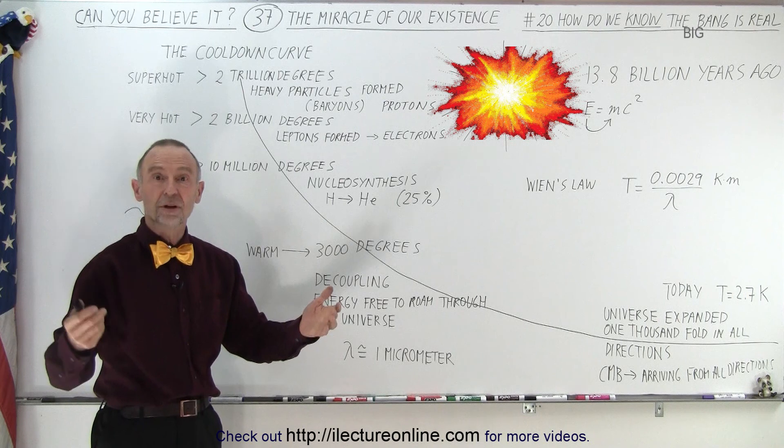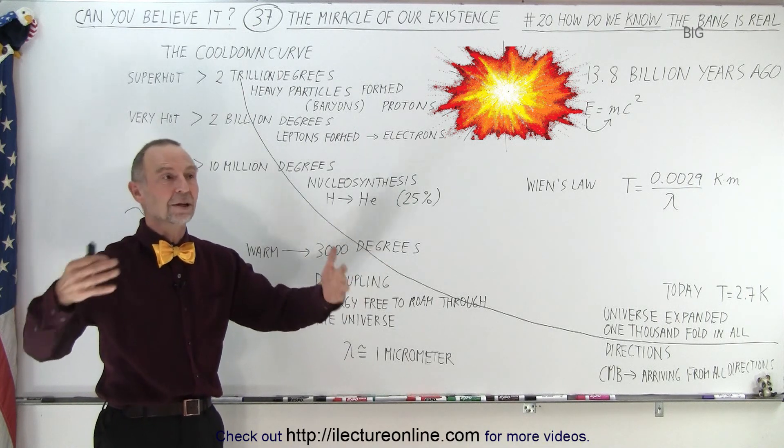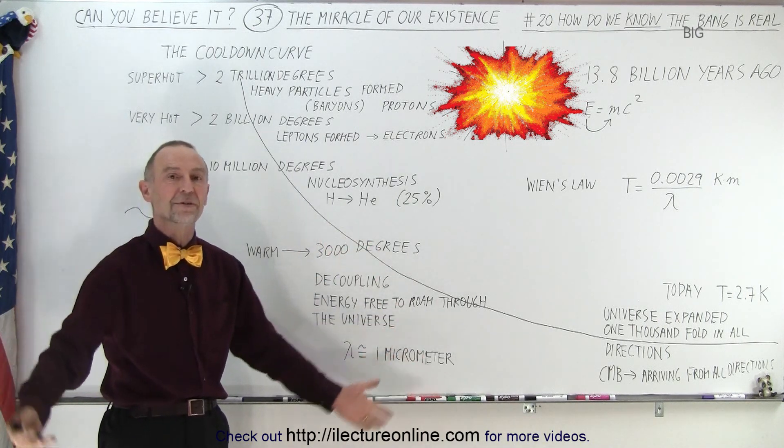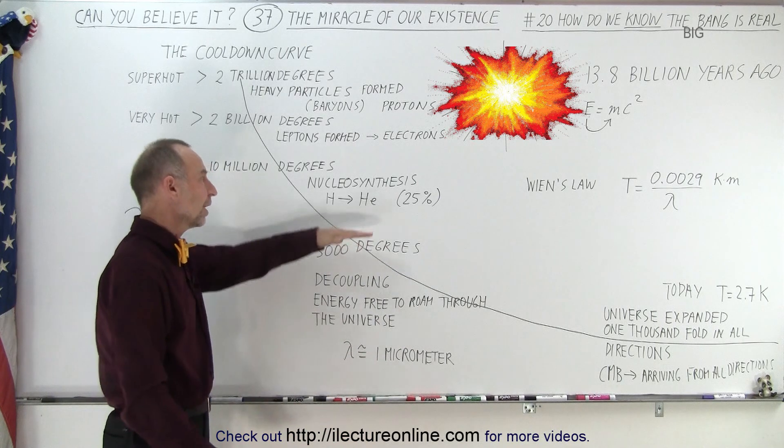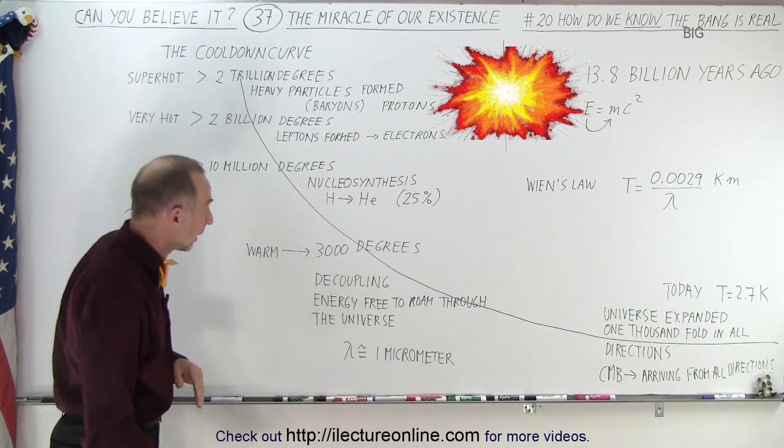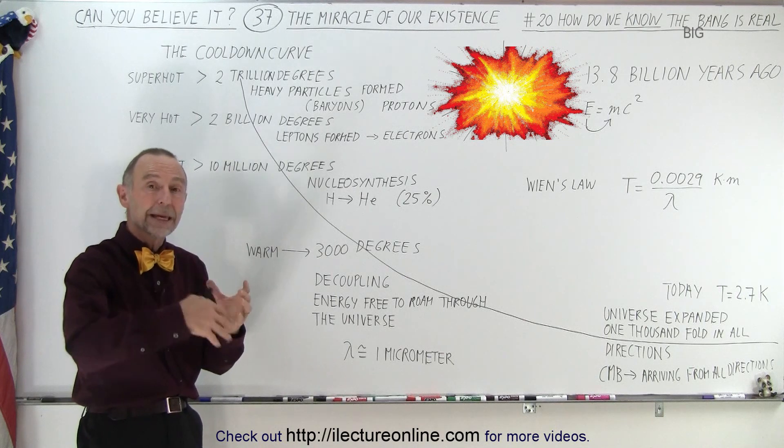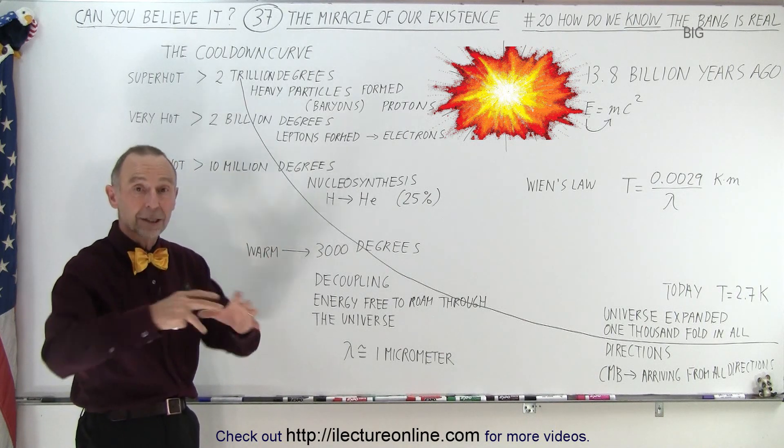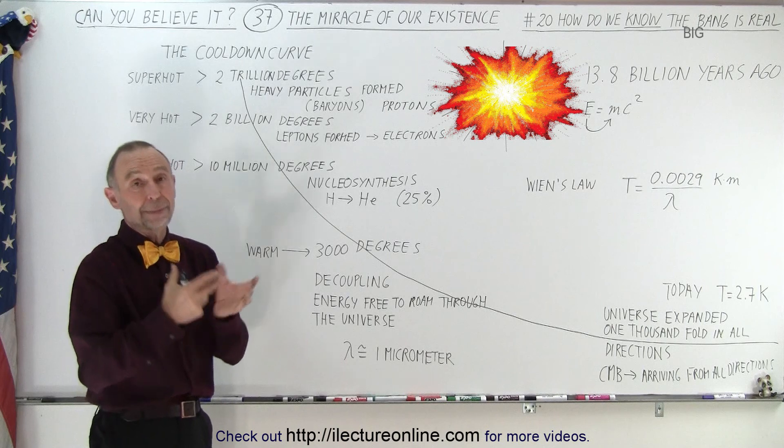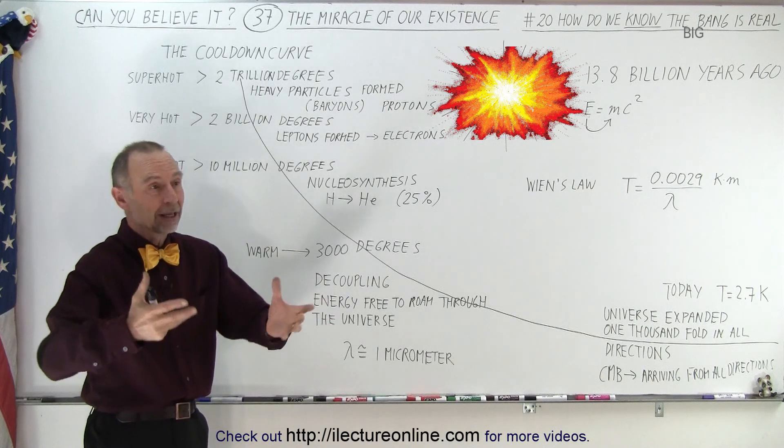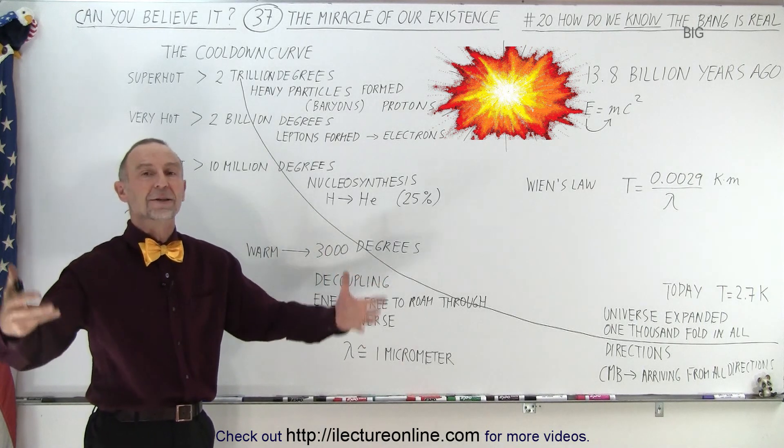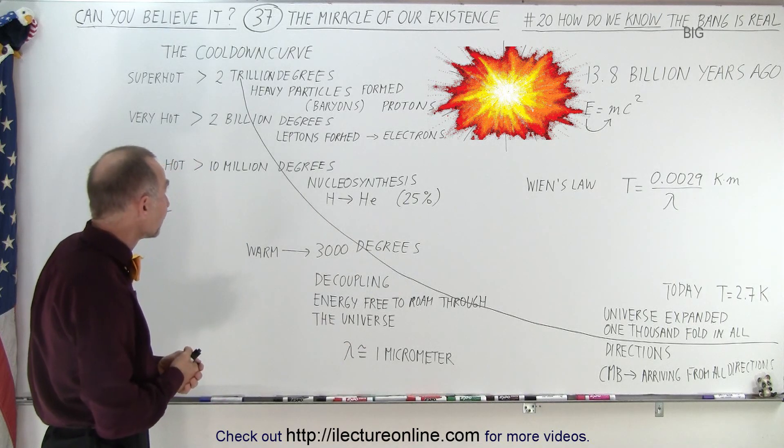Because then stars couldn't exist like the Sun, and we couldn't be living on a planet near a star that was necessary for life. So good thing that it's only a quarter, and now the stars, of course, in their cores, are continuing the process, turning all the remainder of hydrogen into helium. That's the process in what we call main sequence stars like our Sun, that are perfect for living nearby to be nice and warm and have all the energy that we need.